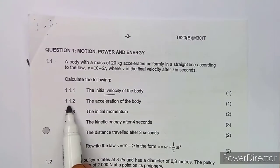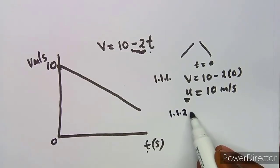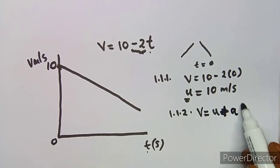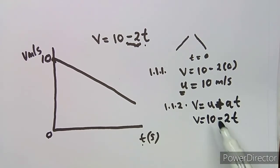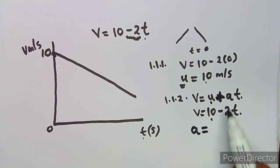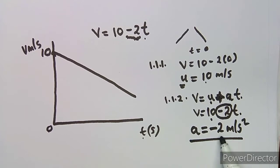Part 1.1.2 asks for the acceleration of the body. From the formula sheet, v = u + at. We are given v = 10 − 2t. Comparing the two expressions: u = 10 and the coefficient of t gives us a = −2. Therefore the acceleration is −2 m/s².